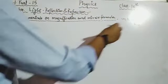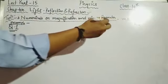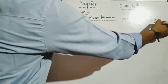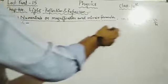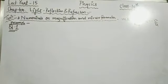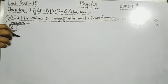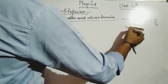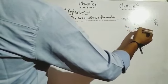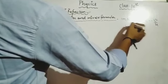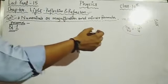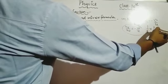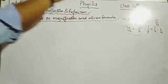The magnification formula gives height of image upon height of object. The formulas are: m = hi/ho, m = -v/u, and hi/ho = -v/u. So students, these three formulas are for magnification. And the mirror formula you know is: 1/f = 1/v - 1/u (sometimes written as 1/v + 1/u depending on sign convention).